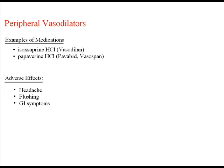Peripheral vasodilators act on the smooth muscle of blood vessels causing peripheral vasodilation. They are used to treat peripheral vascular disorders such as Raynaud's disease, Buerger's disease (thromboangitis obliterans), diabetic vascular disease, and varicose ulcers. Examples include vasodilan and vasospan, which also goes by Pavabid. Common adverse effects include headache, flushing, and GI symptoms, because these vasodilators dilate cerebral vessels causing headache and flushing in the face.